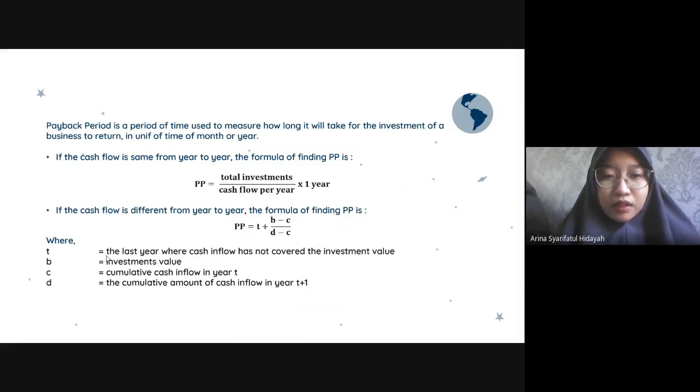PP equals total investment over cash flow per year times one year. If the cash flow is different from year to year, the formula of finding PP is: PP equals t plus b minus c over d minus c, where t is the last year where cash inflow has not covered the investment value.